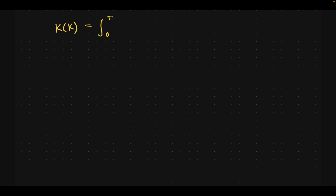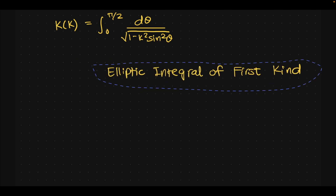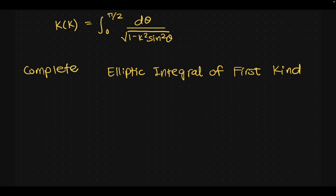Before doing the integral, let me write it down. K(k) is the integral from 0 to π/2 of dθ over the square root of (1 minus k squared sine squared θ). This is called the elliptic integral of the first kind. When the upper bound is π/2, it is the complete elliptic integral of the first kind.